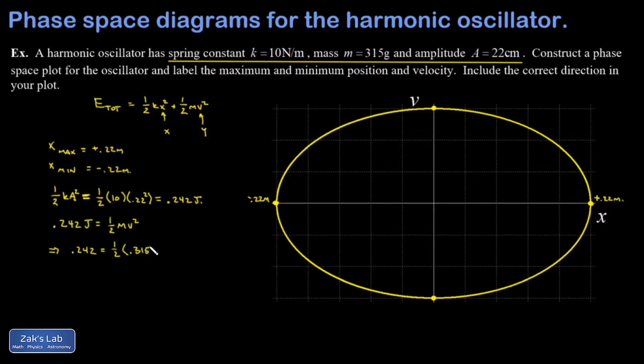The mass of the oscillator was 0.315 kilograms, and I get a maximum speed of 1.24 meters per second. At the top of our ellipse, that velocity is positive, 1.24 meters per second, so the mass is moving to the right.